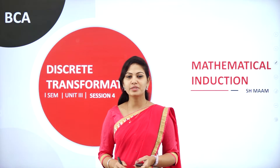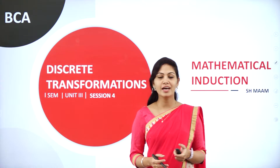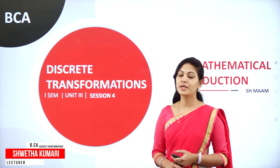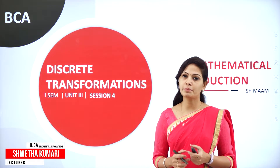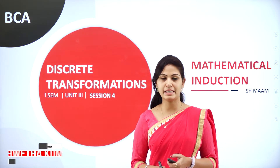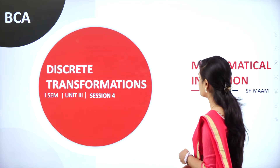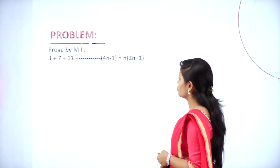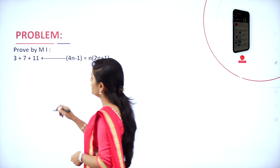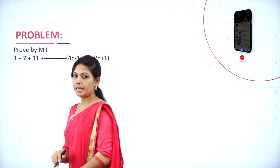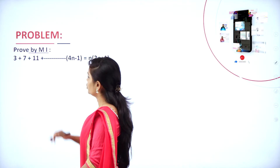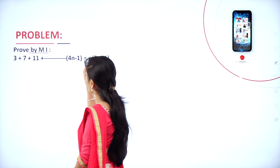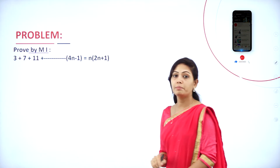Hello my dear students, welcome back to my new session. I am Shweta, Computer Science Faculty with Ashram First State College, Mysore. In my previous session I discussed some important problems on mathematical induction. Today I will explain the last problems on mathematical induction. Here you have one statement — prove by mathematical induction: 3 plus 7 plus 11 plus (4n minus 1) is equal to n into 2n plus 1.